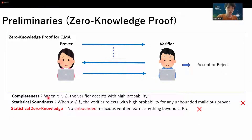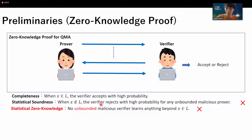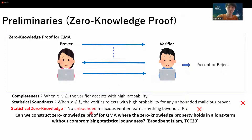So if the protocol satisfies statistical soundness, the zero-knowledge property must be a computational one, and thus a malicious verifier may obtain information beyond the fact that the instance X is a YES instance. So our question in this work is: can we construct zero-knowledge proof for QMA where the zero-knowledge property holds in the long term without compromising statistical soundness?